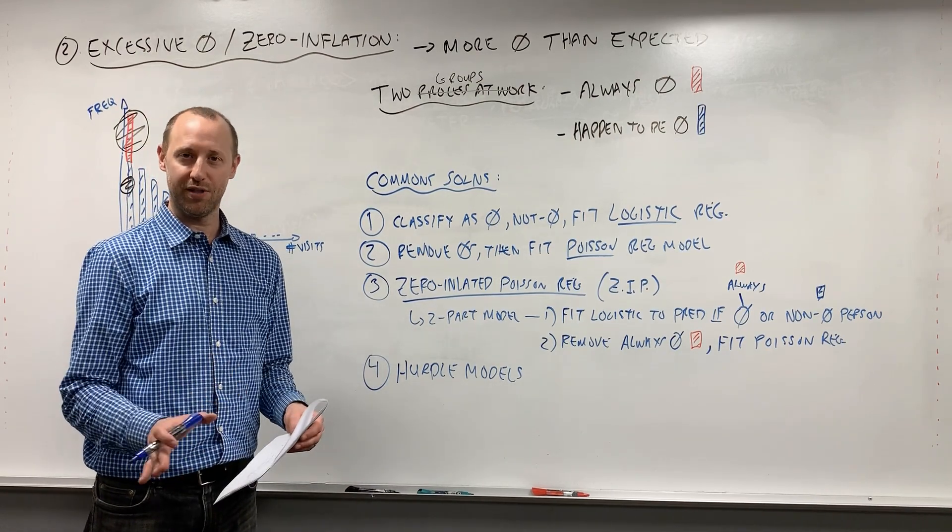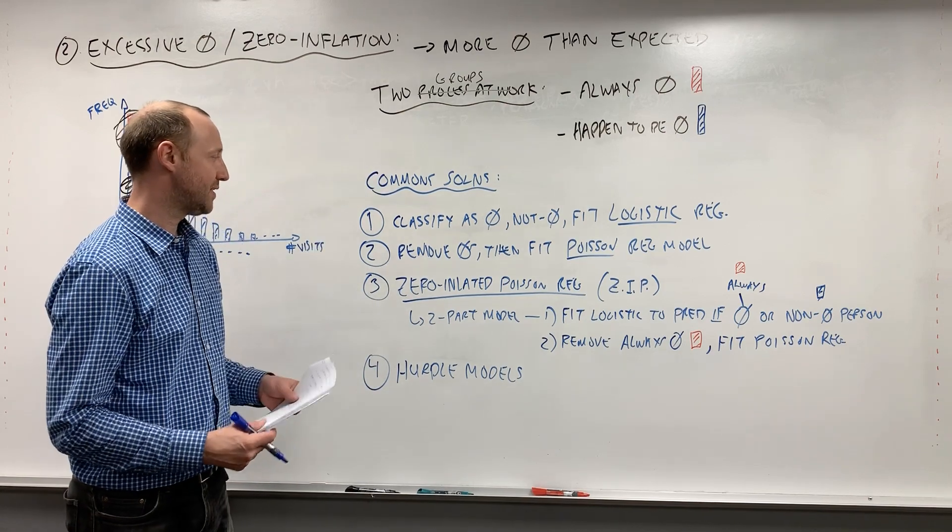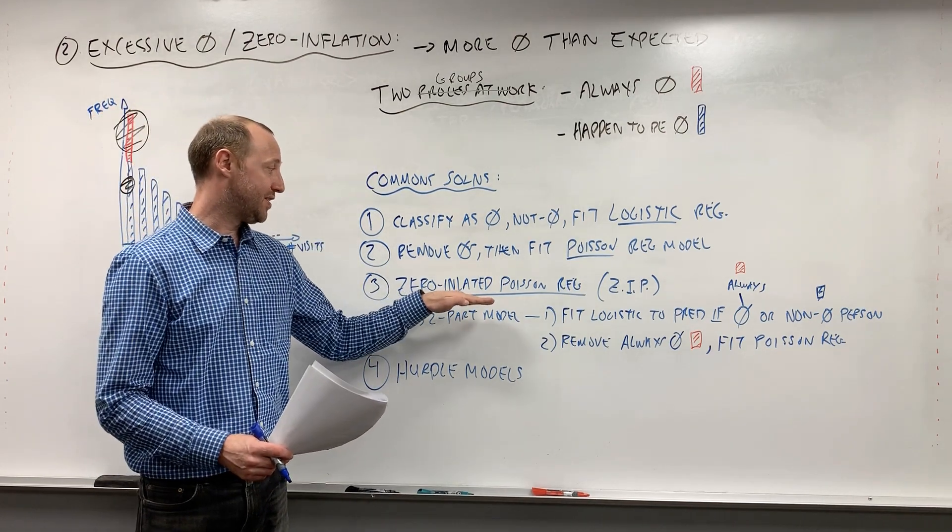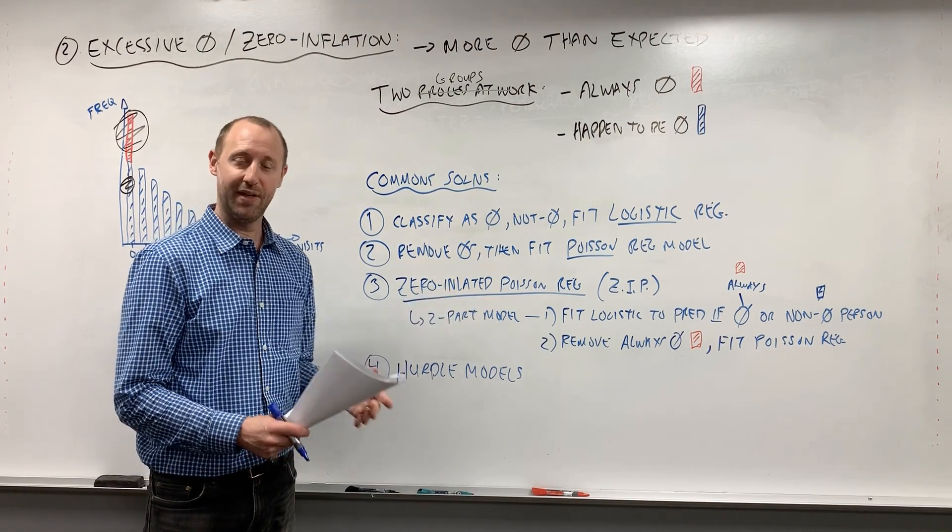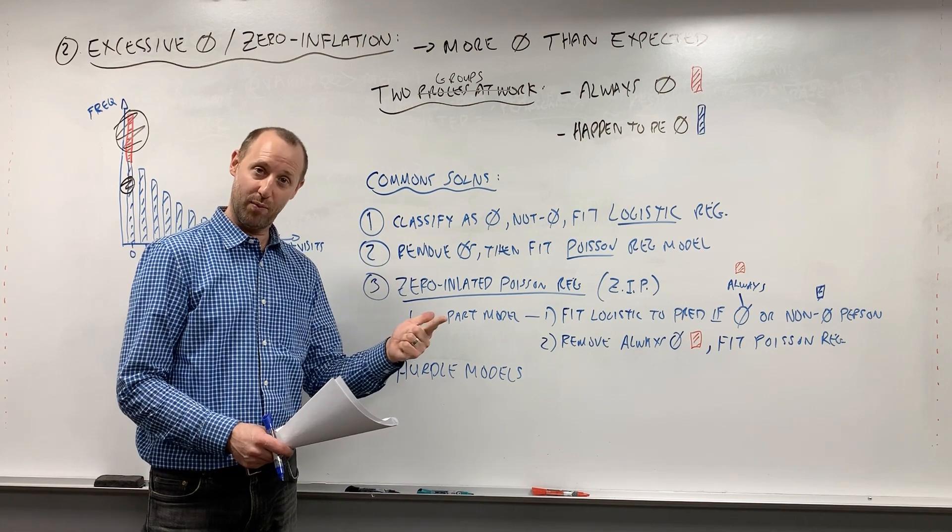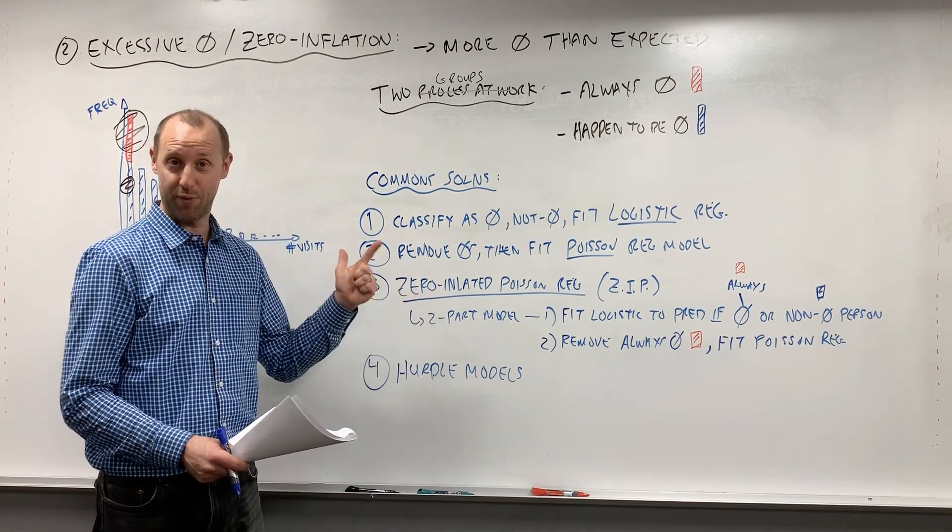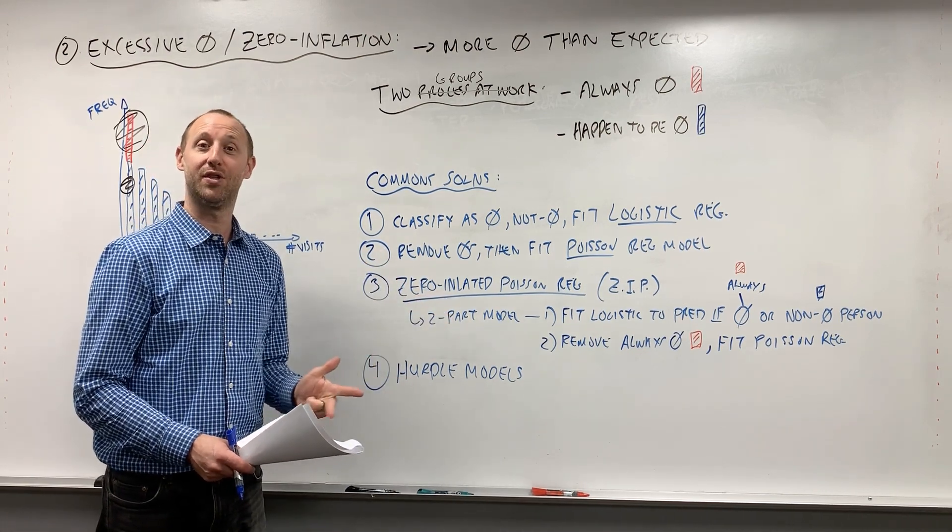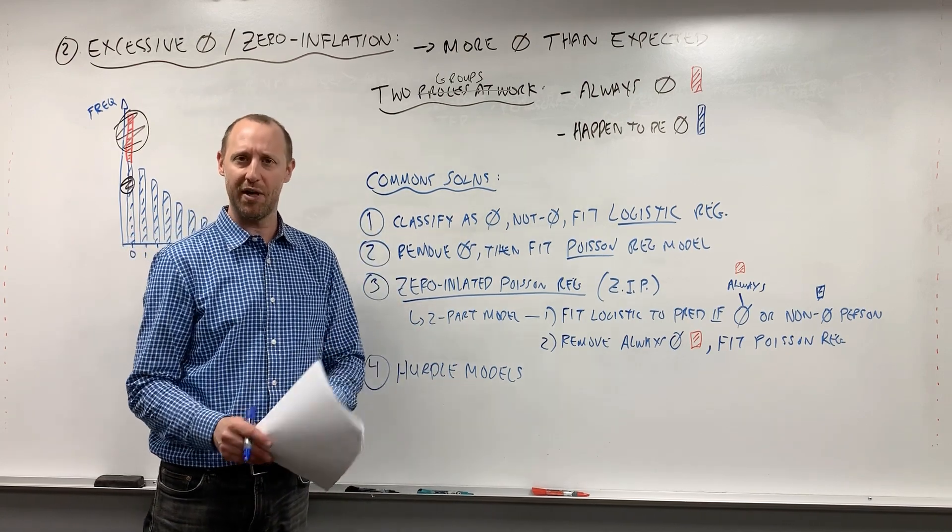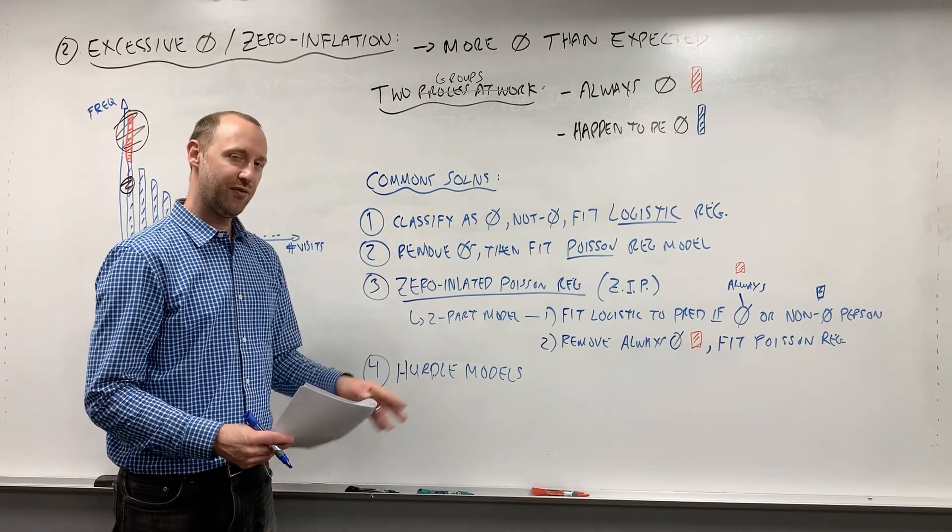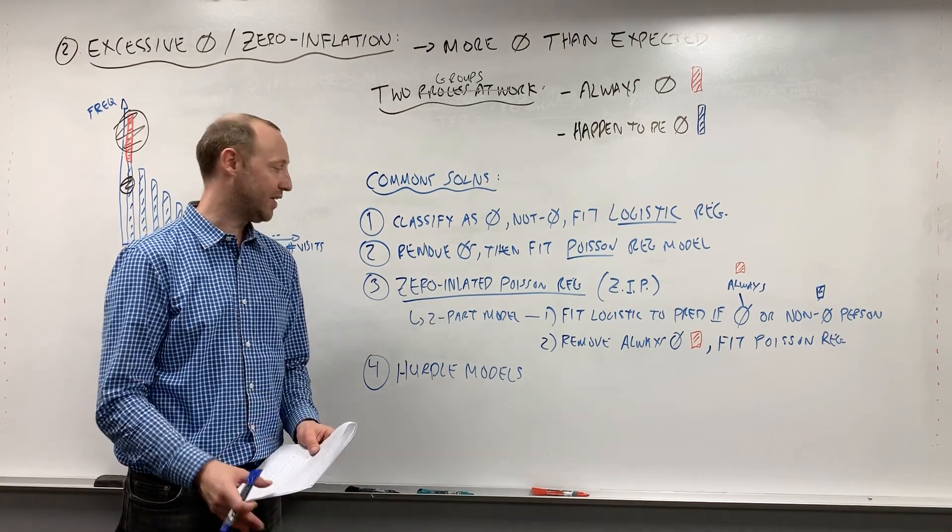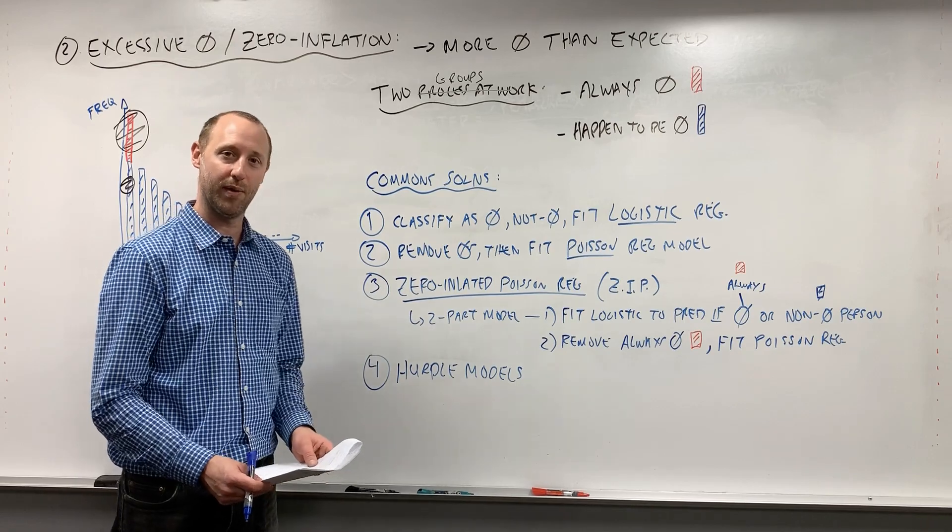So in the R script for this set of meetings, there is a whole bunch of code there that goes through and fits zero inflated Poisson models. So it takes the same data, fits a Poisson regression, a negative binomial regression, a zero inflated Poisson regression, and also a zero inflated negative binomial regression. It puts them all side by side, compares and contrasts them. That's there for you to explore on your own if you want. None of that part will be assessed, but it's there if you want to dig into these a bit deeper and learn a bit more about them.